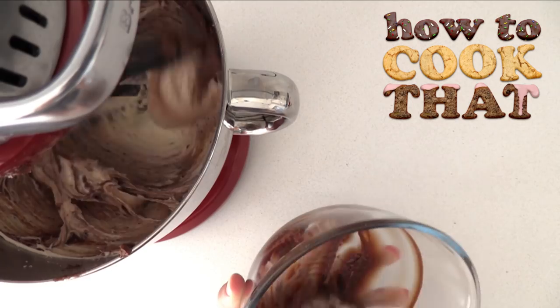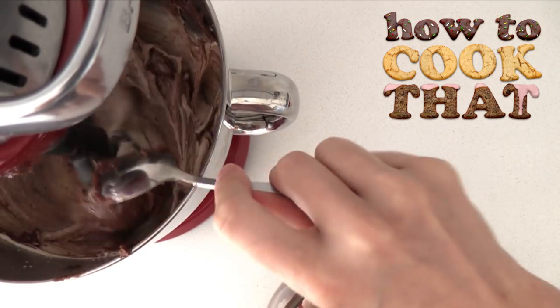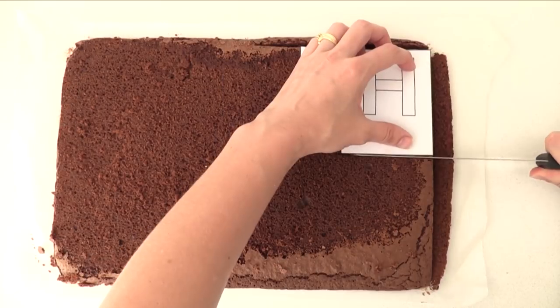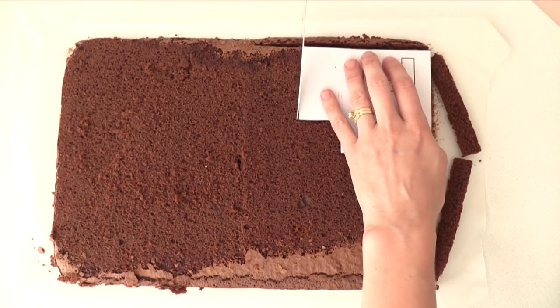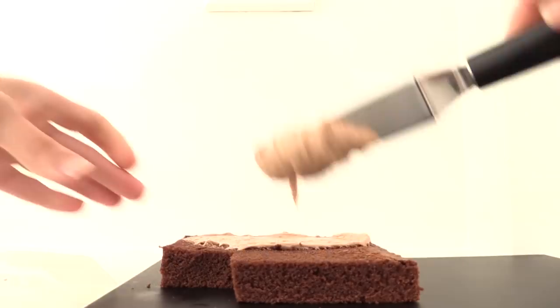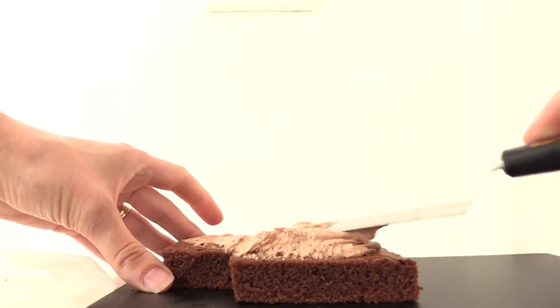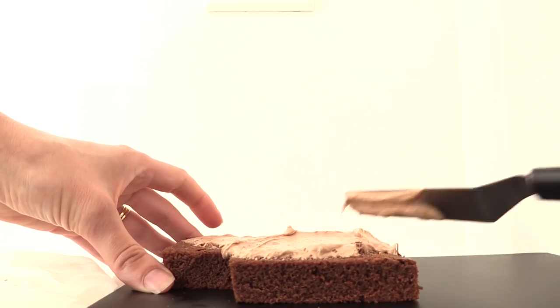You will also need two trays of chocolate cake baked, cooled, and leveled. Place your template on top and cut around the shape of the first building. The template is also available on the website. Place it on a spare cake board or plate and then add a thin layer of frosting.